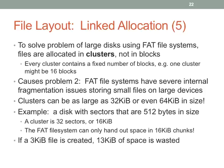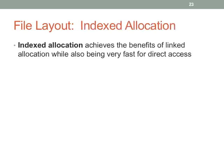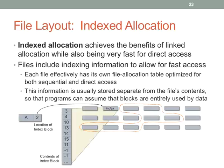Indexed allocation basically allows you to have an indexing mechanism that scales with the amount of data you need to store, as opposed to having a fixed amount of space for specifying where files are. Most operating systems now use some kind of indexed allocation. Files include their indexing information — the file itself says where its data is stored. The file allocation information is on a per-file basis: many files means more indexing overhead; few files means little indexing overhead. It scales with the system.